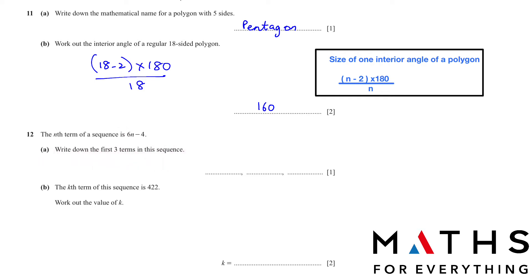Question 12: the nth term of a sequence is 6n minus 4. Write down the first three terms. This is very easy — just replace n with 1: 6 times 1 minus 4 gives 2. Then replace n with 2: 6 times 2 minus 4 gives 8. The third term: 6 times 3 minus 4 gives 14.